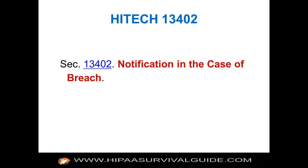These are the sections from the HITECH Act — if you click on these, you will be taken to the HIPAA Survival Guide to read the full text. Section 13402, notification in case of breach, is where breach notification came from. Section 13402A says that covered entities must notify individuals. Individuals and HHS always have to be notified. HHS is either going to get notified within 60 days of a breach depending on the number, or at the end of the calendar year. Business associates don't do the notification — business associates must notify their covered entity, and it's the covered entity's responsibility to notify.